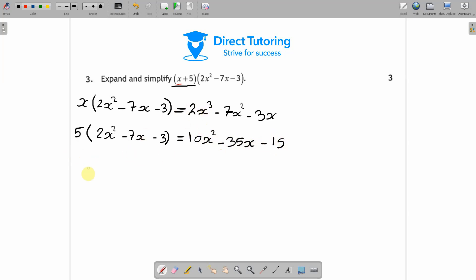Now if we just add all of these together, we end up with 2x³ - 7x² - 7x² - 3x + 10x² - 35x - 15.